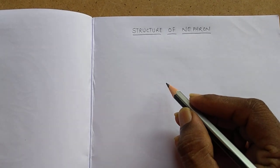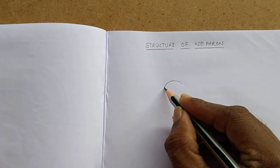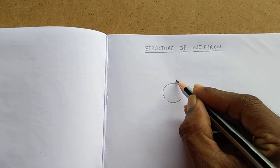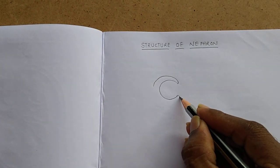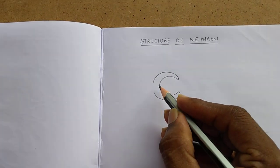Hi friends, in this video we shall learn how to draw the structure of a nephron. First of all, we have to draw a C shape for Bowman's capsule with a double line for this C.